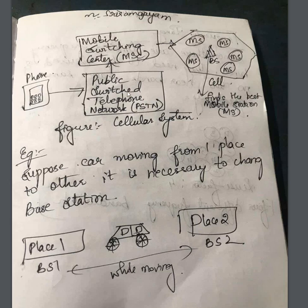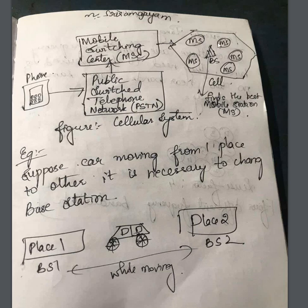Here is the call flow scenario: when a person dials a number, the call goes to the PSTN — the Public Switched Telephone Network. From there it moves to the Mobile Switching Center (MSC). From the MSC it is passed to the base station, which selects the best mobile station — one that gives the signal without attenuation or noise. That is the concept of the cellular system.